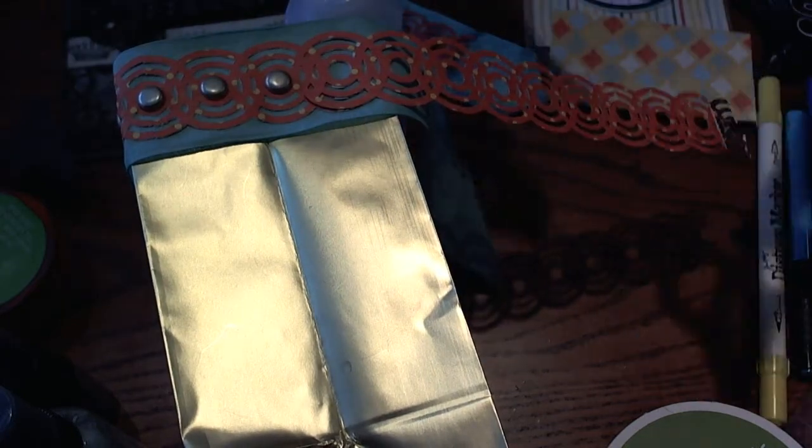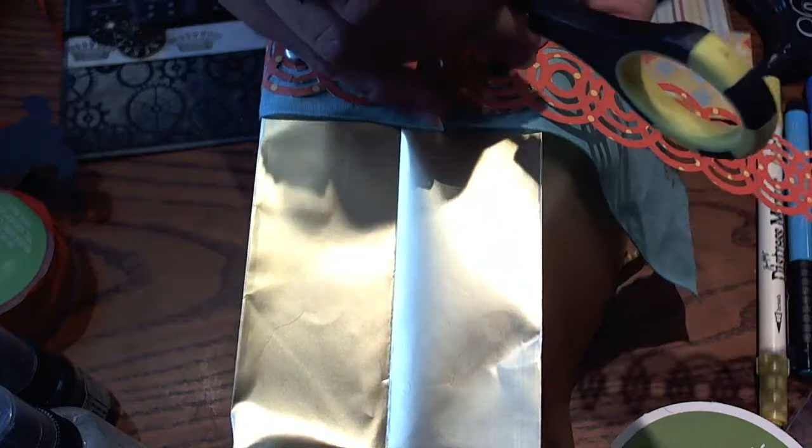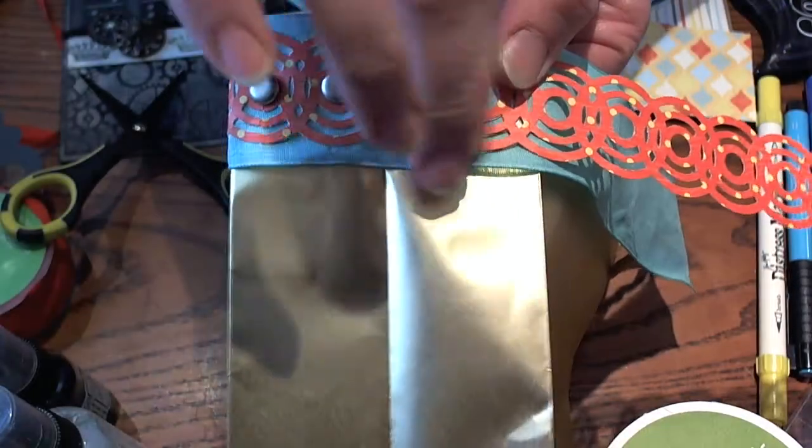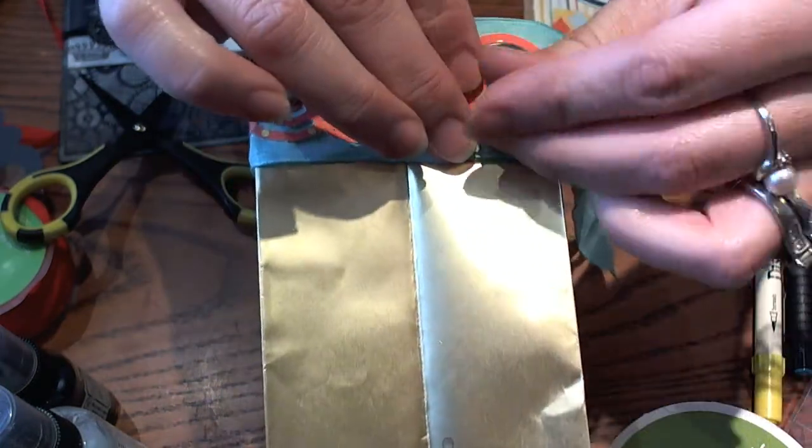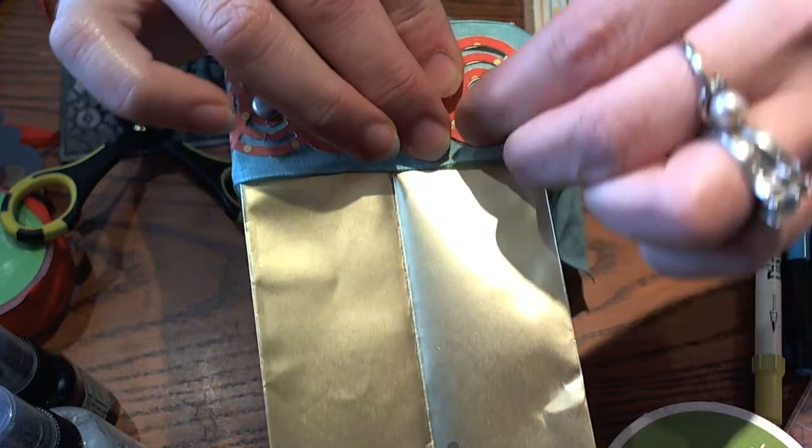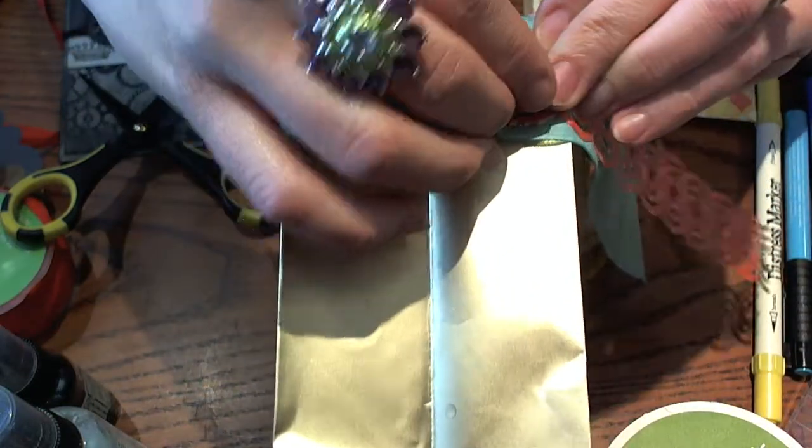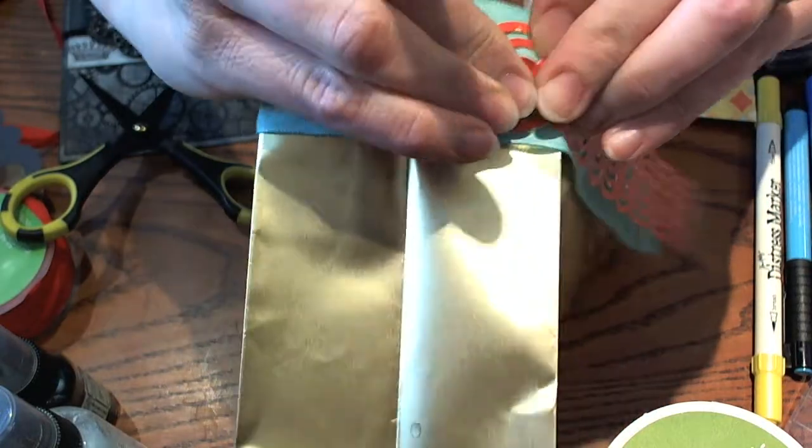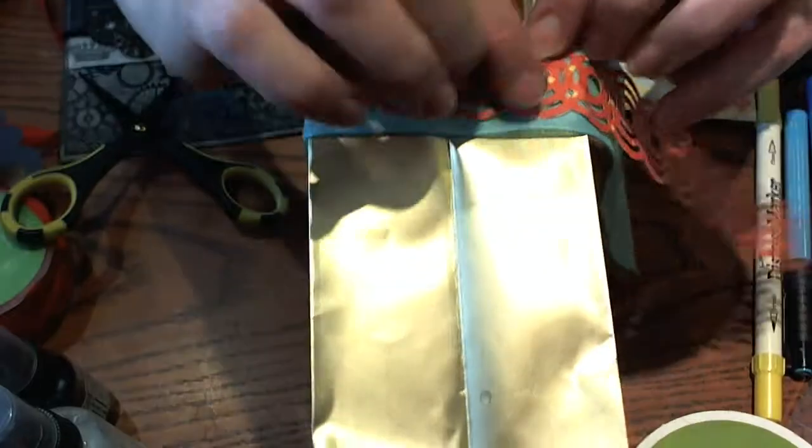Then all you're going to do is take a poker tool, or I'm going to use my scissors, and I'm just going to go right in the center and poke a small hole. Then I'm going to grab my brads and attach this all to the bag using a brad. You want to make sure it's lined up with the top of your bag. Then you're just going to poke that through and attach the brad on the back side.